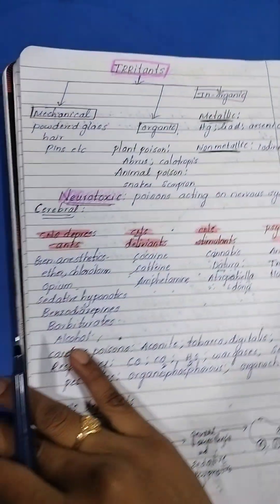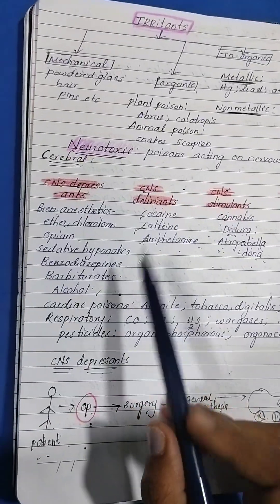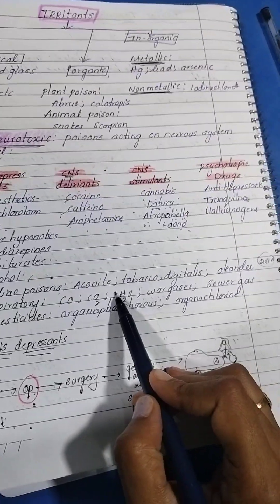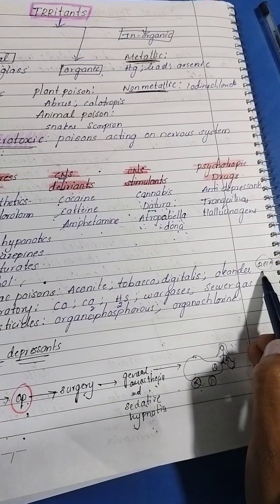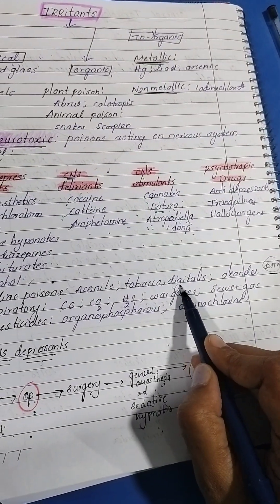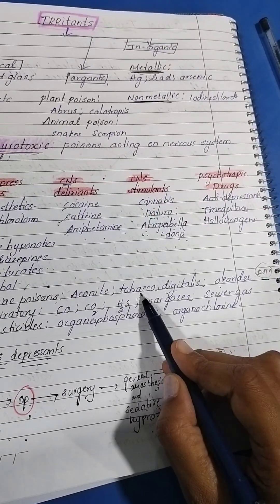For cardiac poisoning, you can remember this like a dot. D for digitalis, O for oleander, T for tobacco, A for aconite.